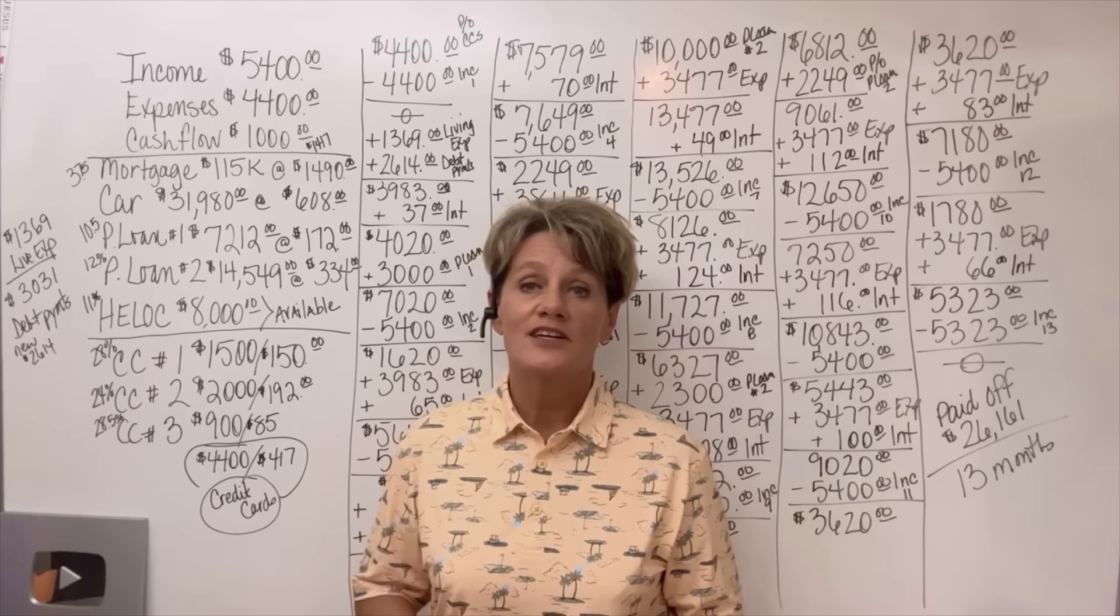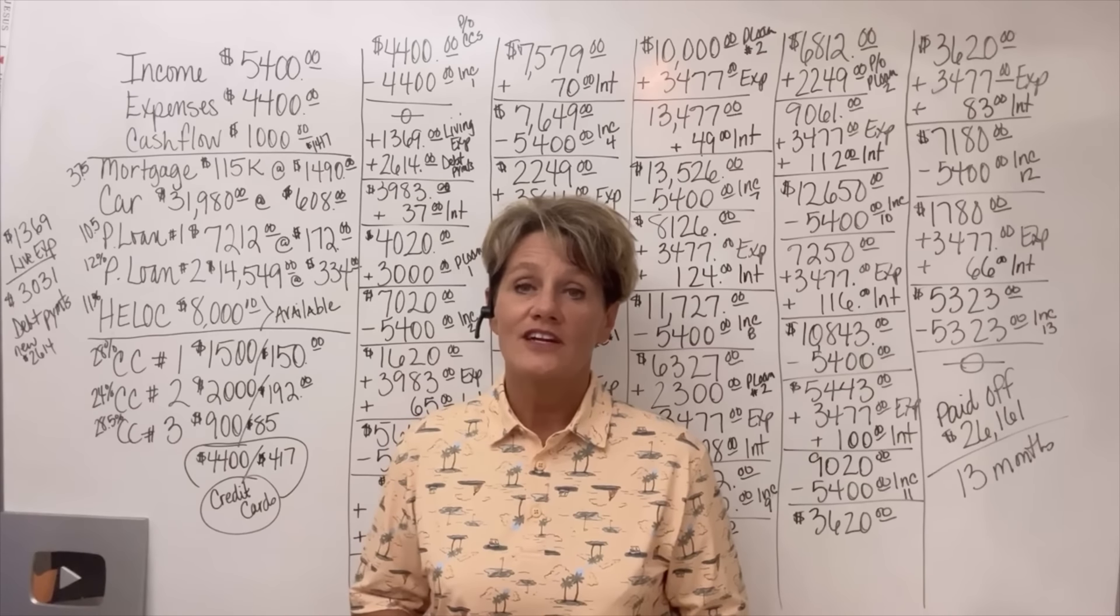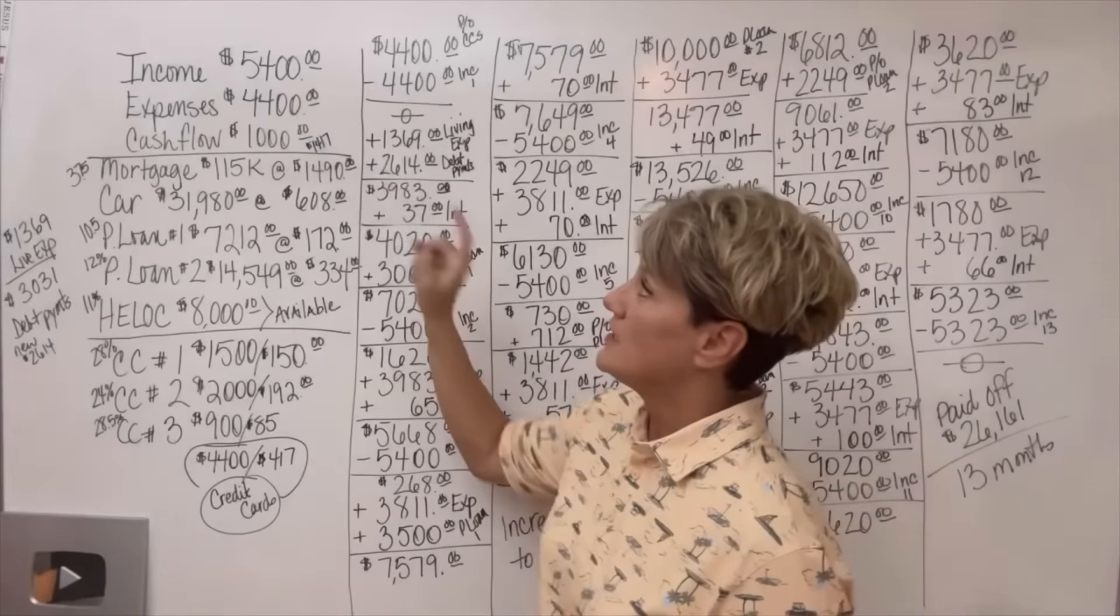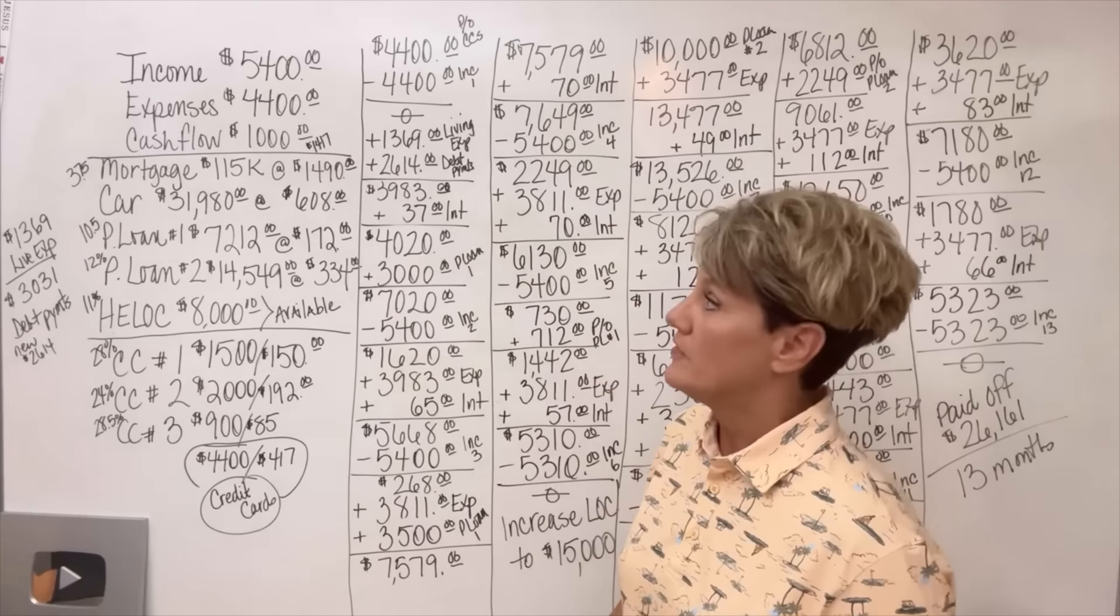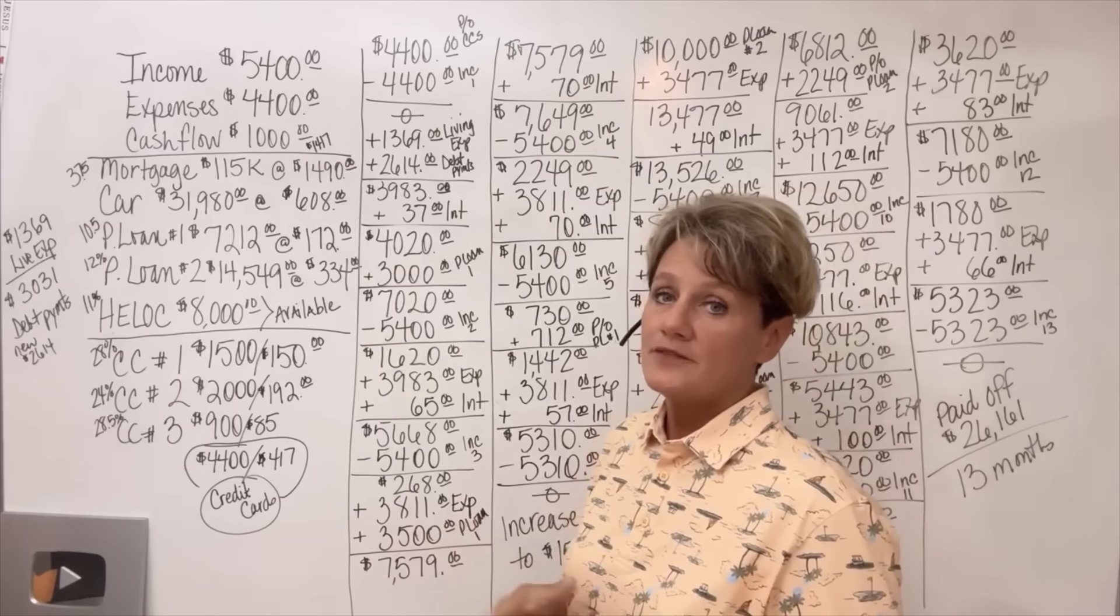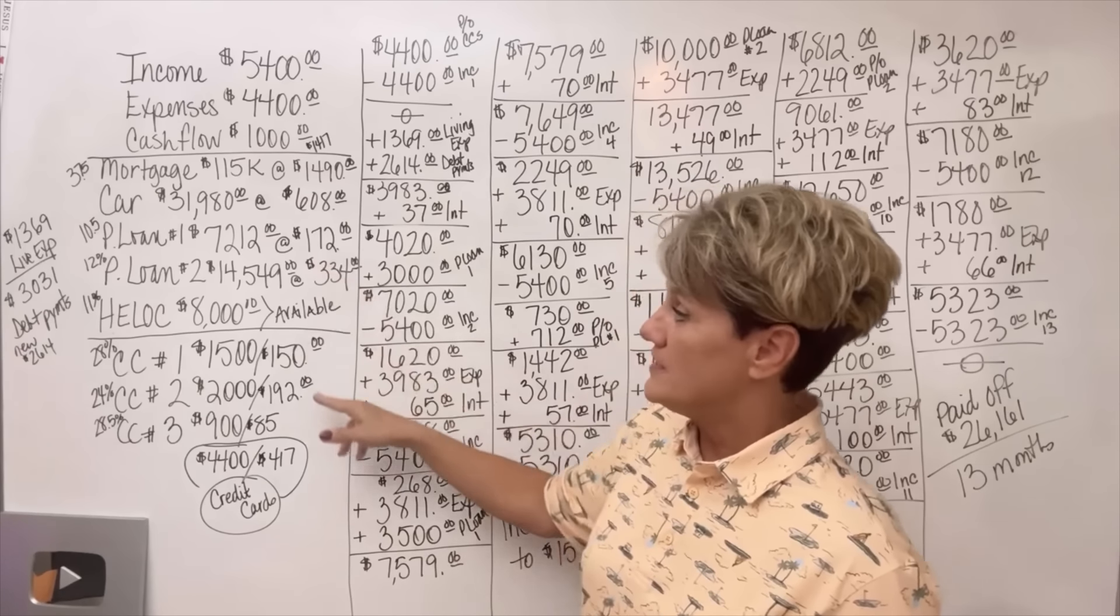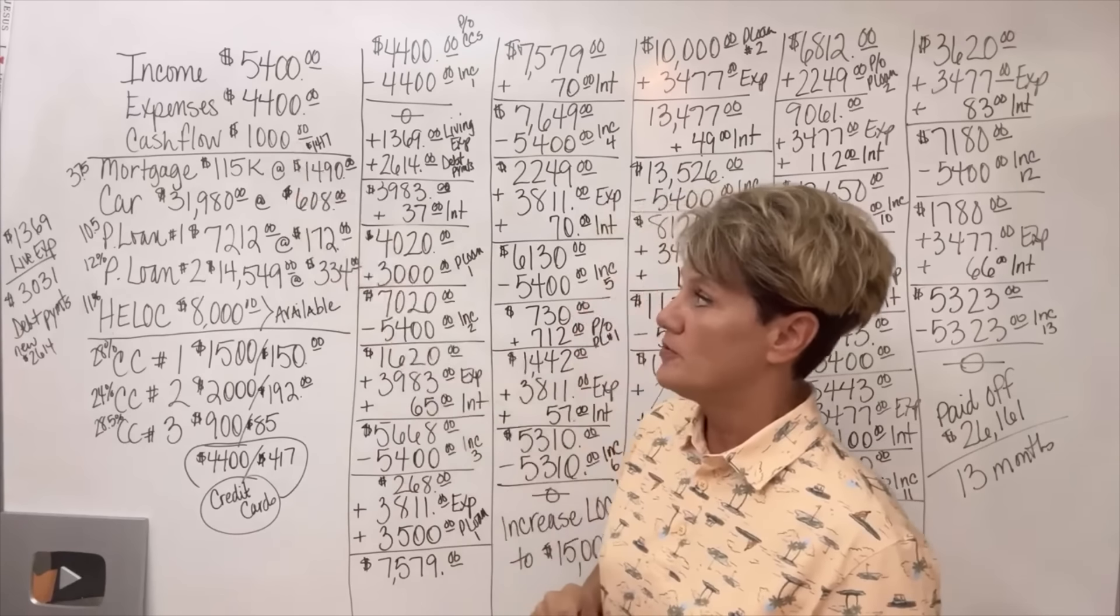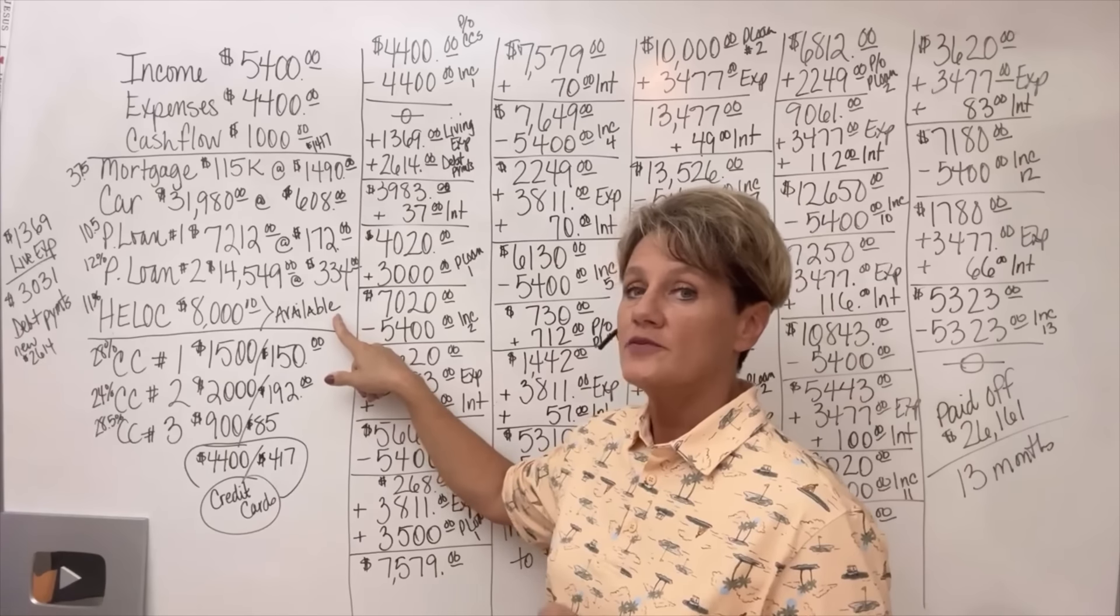Let's see how long it took him to get to the end of the personal loans and the credit cards that he had piled up the business debt upon. Sam's income is $5,400 a month. His expenses were at $4,400 a month. That includes his living expenses, food, gas, utilities, but it also included his mortgage payment and all of these debts that you see listed here. That left him with a cash flow of $1,000 per month. Now remember, I said he had an $8,000 HELOC that was available.